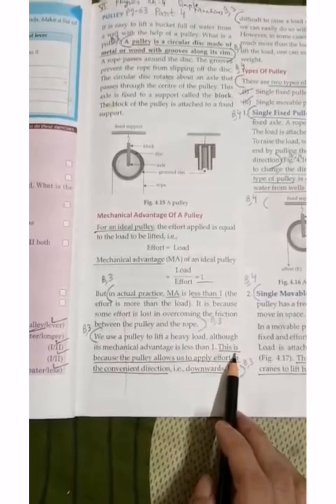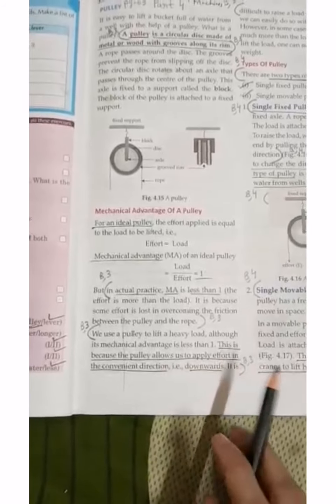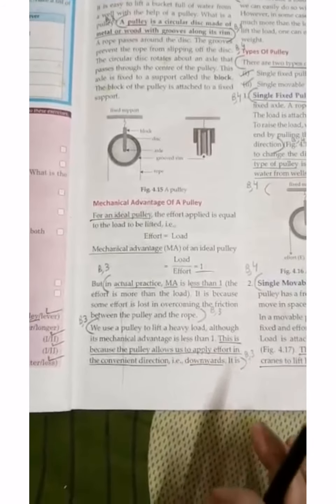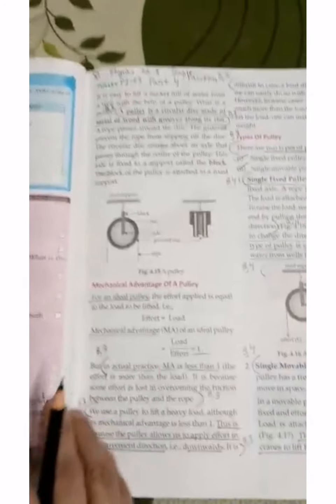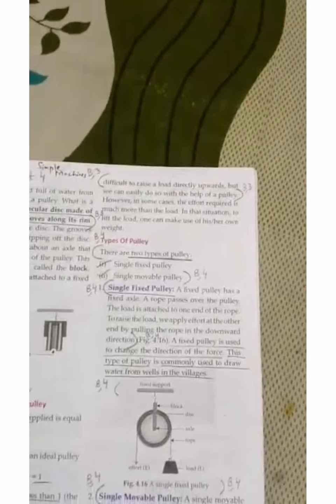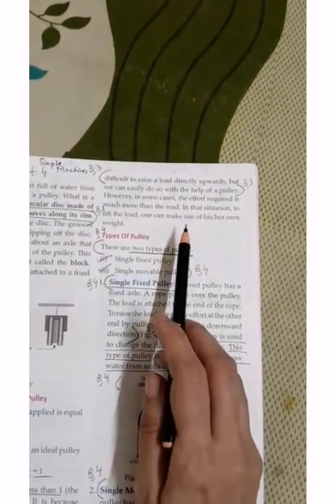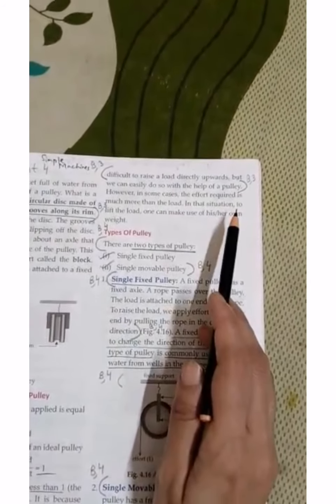This is because the pulley allows us to apply effort in a convenient direction - that is downwards. It is difficult to raise a load directly upwards, so this is why we take the help of the pulley.